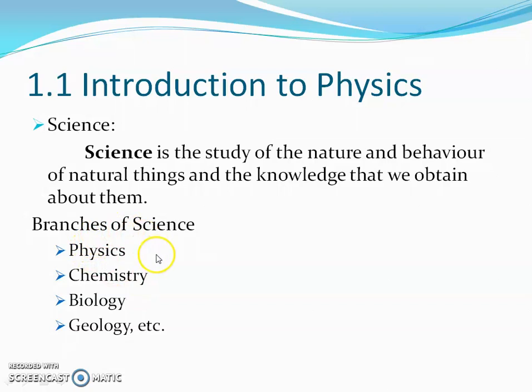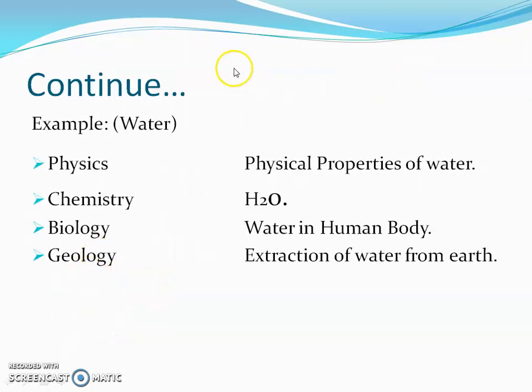So our basic concept or our basic perspective would be physics. As you know that a single entity can be included in many branches, so how we are going to differentiate it? I have prepared an example.